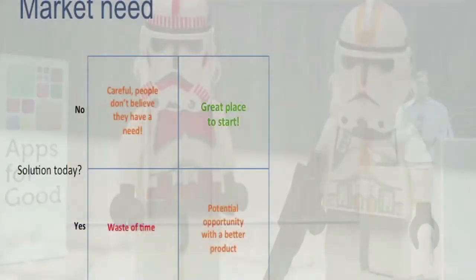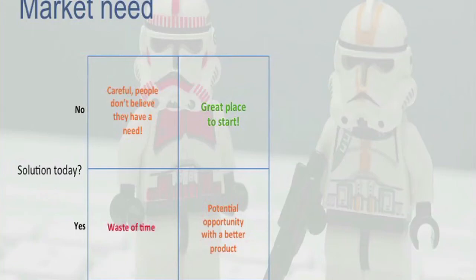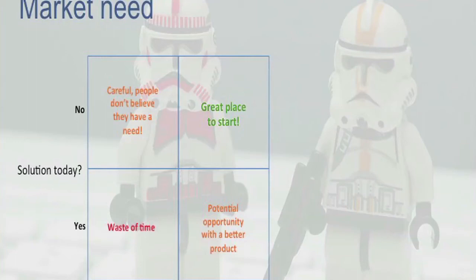Let me talk briefly about the market need. I've created a simple two-by-two matrix here. On the y-axis, the question is: is there already a solution in the market today? Yes or no? And on the x-axis: are people generally satisfied with the tools available today? If you look at the lower left-hand quadrant — if there is a solution today and people are happy with it — the likelihood of you creating another app that makes them switch to yours are almost nonexistent. So there's a huge risk of wasting your time if you start out in this quadrant.